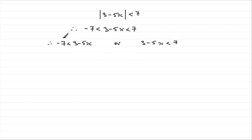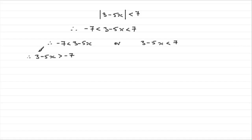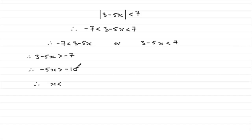There are several ways we could go about this. I'm going to reverse the first inequality: 3 minus 5x is greater than minus 7. Subtracting 3 from both sides gives minus 5x is greater than minus 7 minus 3, which is minus 10. You've got to be careful now because we're dividing by minus 5. When you divide by a negative number, you must turn the inequality around. So we end up with x is less than minus 10 divided by minus 5, which is positive 2.